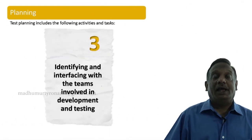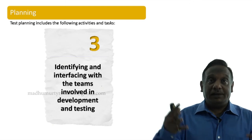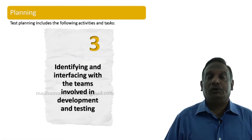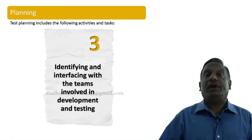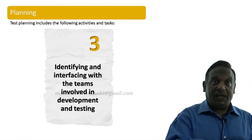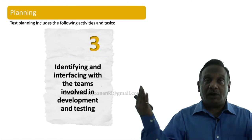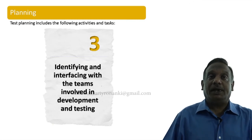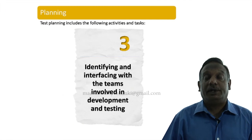The third item is identifying and interfacing with the teams involved in development and testing. Testing is not an isolated activity — testing happens because there is development happening. You are testing software created by developers; you will find defects and report them back to your development team. When they fix the software and release a new build, you continue testing. There is a lot of coordination needed between the development team, test team, and some other teams on the client side as well. Identifying and interfacing with the teams also has to be articulated in your plan document.